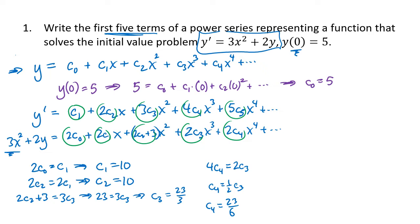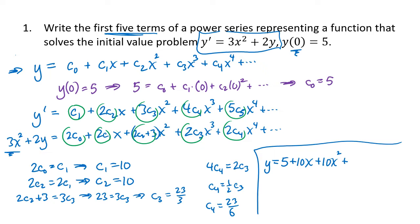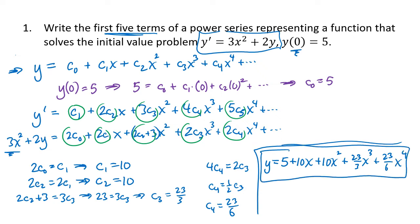So my power series solution is y = 5 + 10x + 10x² + (23/3)x³ + (23/6)x⁴. There's nothing stopping us from going further — we could find as many terms as we'd like. Depending on what you're trying to do with the solution, this may or may not be enough terms to get you an accurate answer.